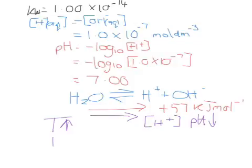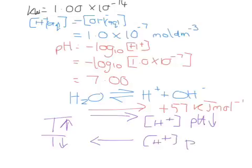If we lower the temperature, the equilibrium will shift towards the exothermic side, which is towards the left. Therefore there will be a lower hydrogen ion concentration, and the pH will increase.